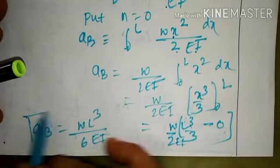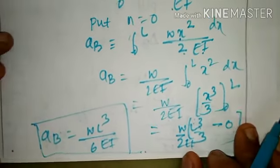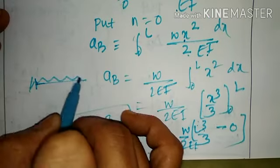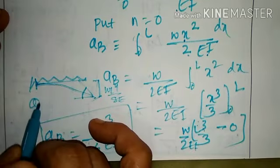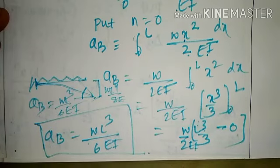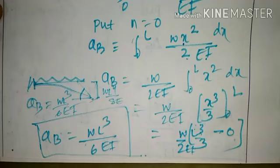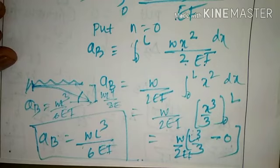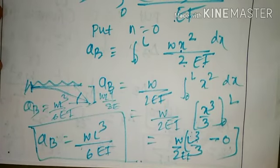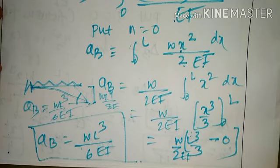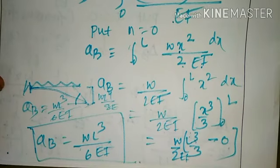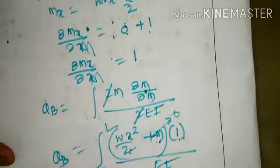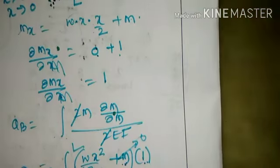The slope at the free end of a cantilever beam subjected to UDL throughout is WL³/6EI. In summary: deflection is WL⁴/8EI and slope theta B is WL³/6EI, expressed in radians. In both cases, since no concentrated force or moment was present, we introduced a dummy force and dummy moment. Deflection is found by partial differentiation of strain energy with respect to load; slope is found by partial differentiation with respect to moment. Thank you, have a nice day.